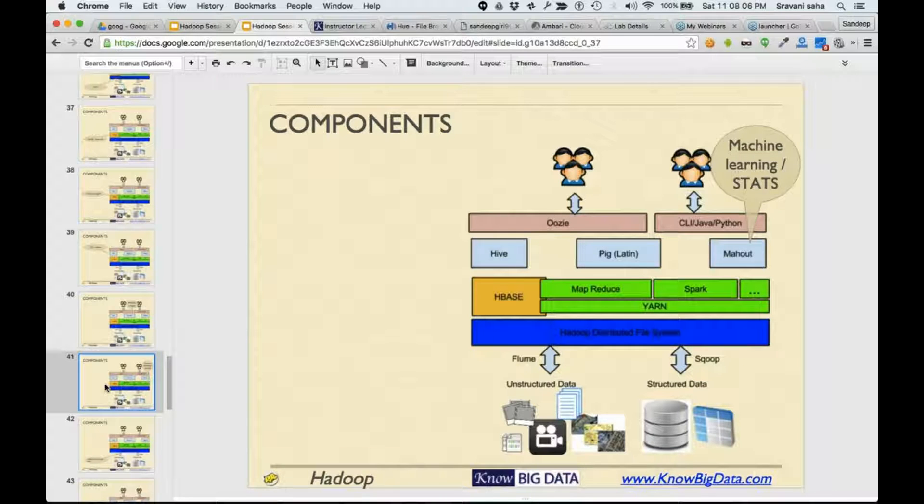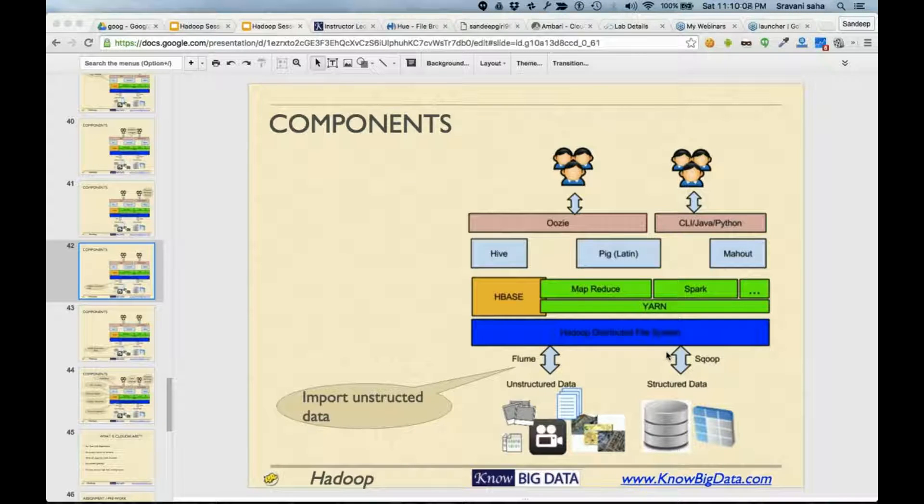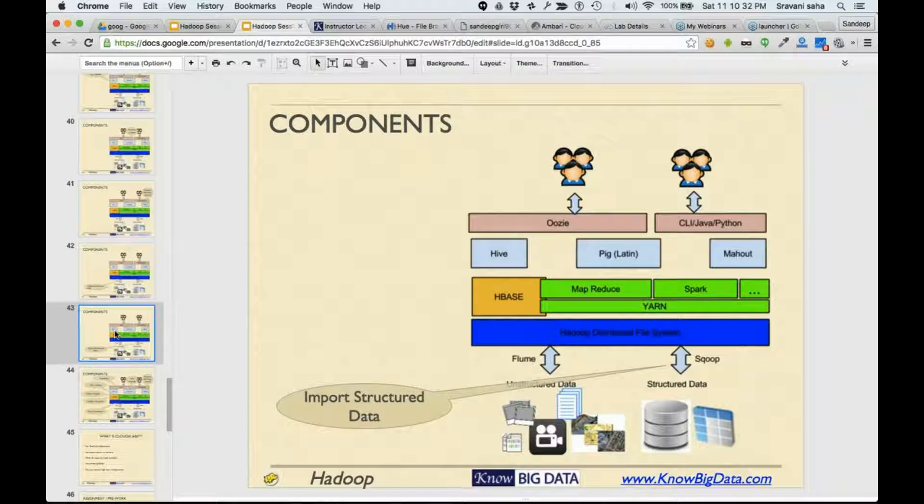You have Mahout as a machine learning library. Then at the bottom you have Flume. What does Flume do? Flume imports unstructured data into HDFS. If you are moving movies, videos, and lots of files continuously, then you use Flume. In case you want to import data from Oracle, MySQL, or Microsoft SQL, you can use Sqoop.